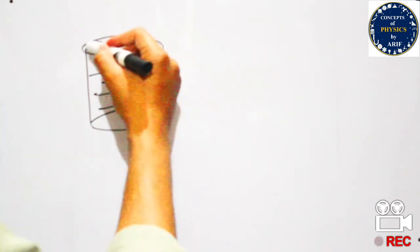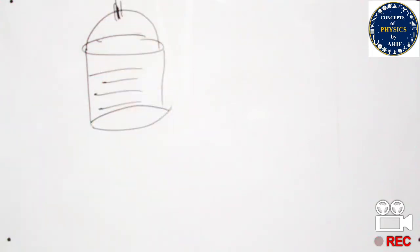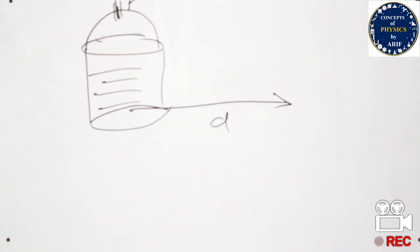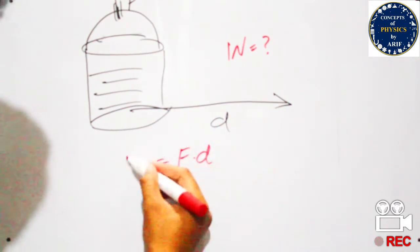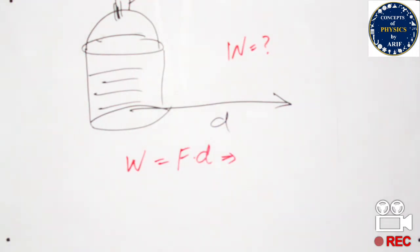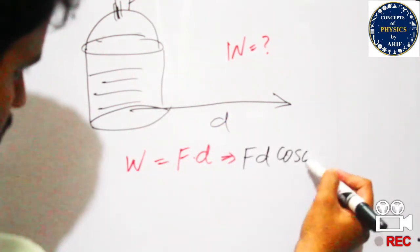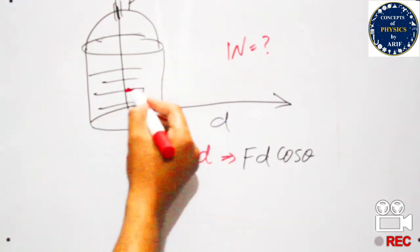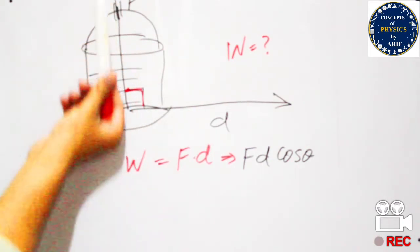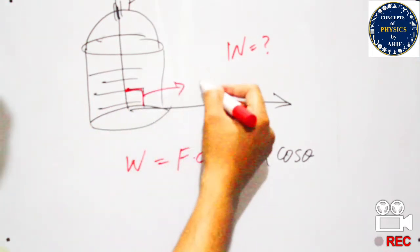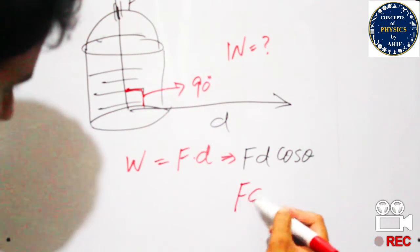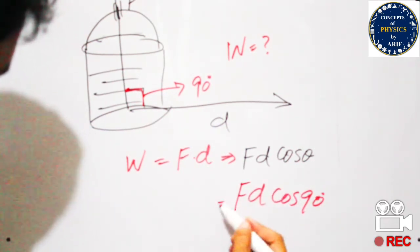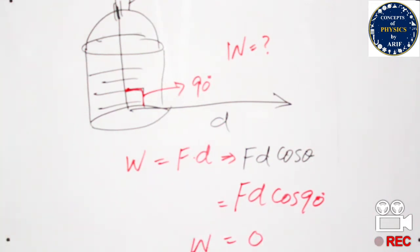For example, when a bucket full of water is carried by someone, the force is along the upward direction and the person is moving horizontally with some displacement. The work done is W = F dot D = F D cos theta. The angle between F and D is 90 degrees, because force is along the vertical axis and displacement is along the horizontal axis.